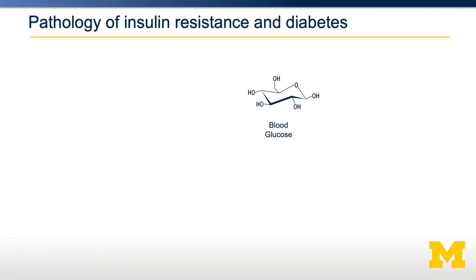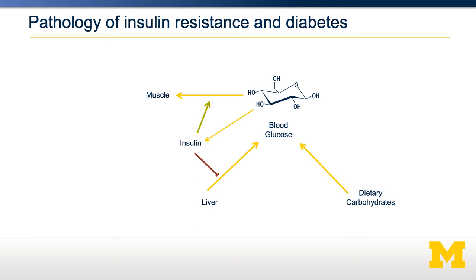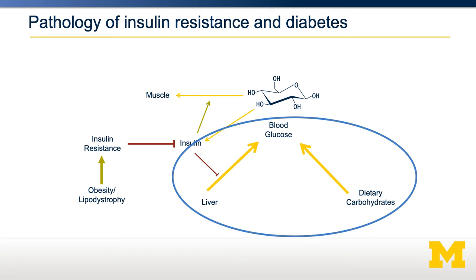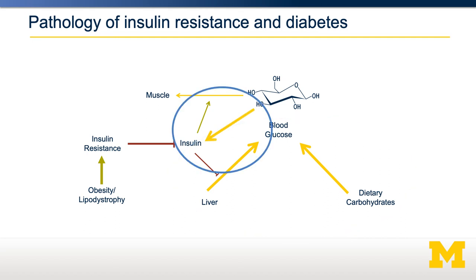Let's talk about how insulin resistance and diabetes progress over time. Blood glucose has to be maintained within a narrow range. Blood glucose is provided by dietary carbohydrates and by liver production through gluconeogenesis and glycogenolysis. Several tissues use blood glucose, but after a meal, the major disposal tissue is muscle. As blood glucose levels rise, insulin levels rise, which then suppresses glucose production and promotes glucose disposal. This homeostasis keeps blood glucose levels in control in healthy individuals. However, in people with obesity or lipodystrophy, there can be insulin resistance — meaning insulin is less able to suppress gluconeogenesis and glycogenolysis, and also less able to promote glucose uptake in muscle. As insulin resistance increases, glucose uptake decreases and glycogenolysis increases, so blood glucose levels stay high, signaling the release of more insulin.